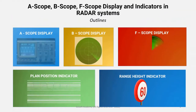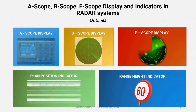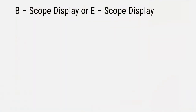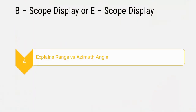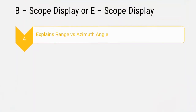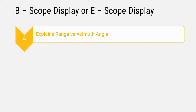This is the B scope display. In the B scope display, the axes are range versus azimuth angle. The range refers to the distance between the radar system and the target.